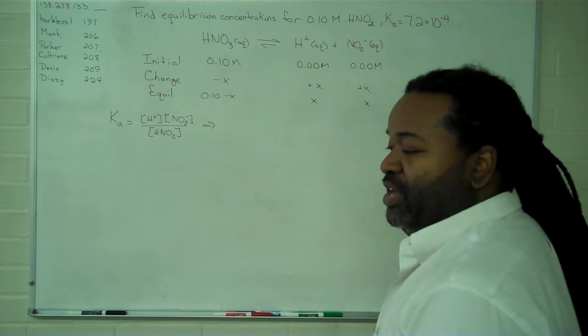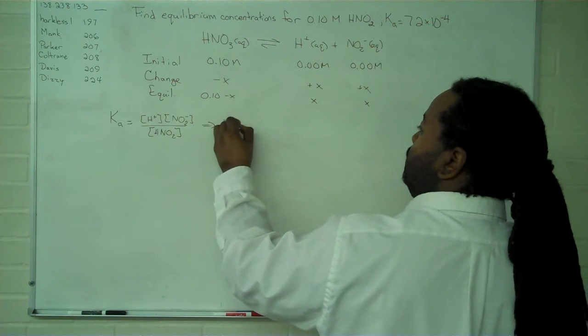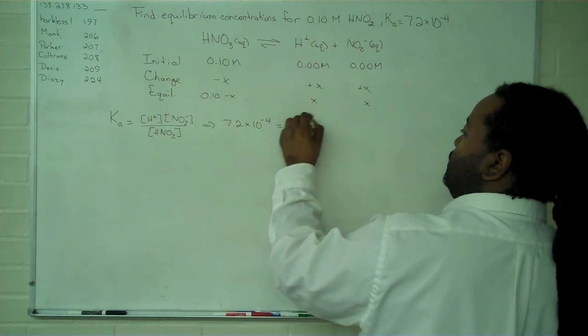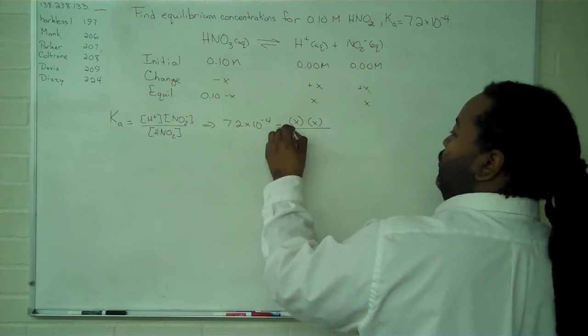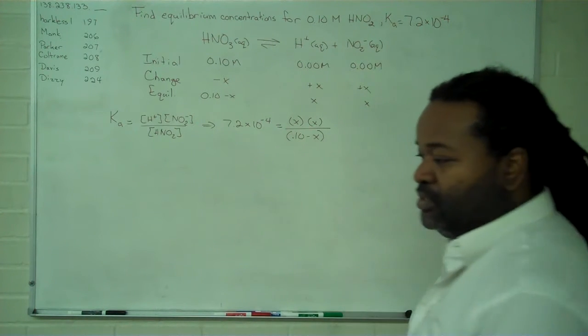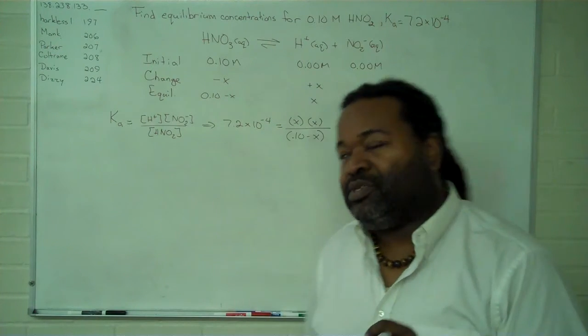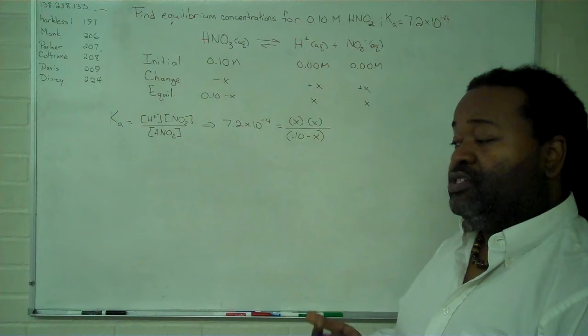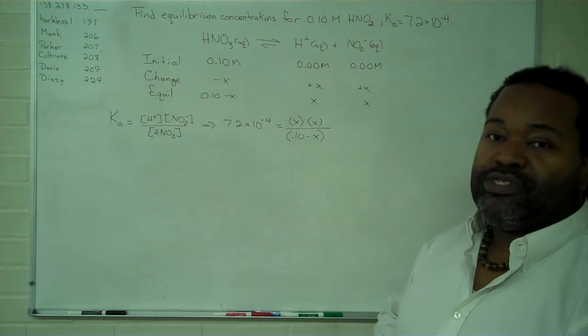So we can plug in values now where we get 7.2 times 10 to the negative 4 equals x times x divided by 0.10 minus x. So if we can assume that the value that we're subtracting off is very small relative to the amount we started with,